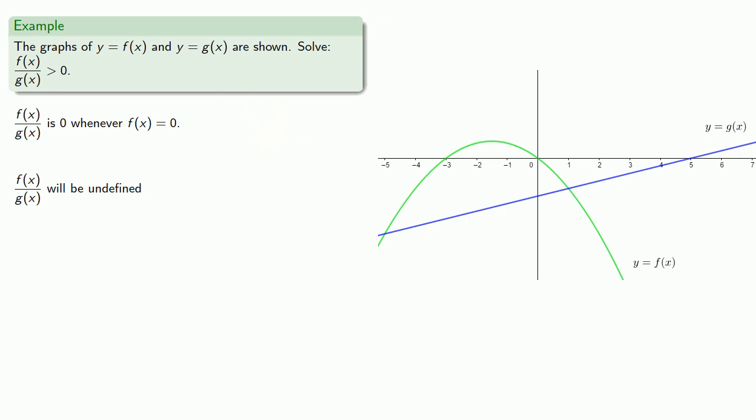On the graph of y equals f of x, f of x is equal to zero whenever y is equal to zero. In other words, at the x-intercepts, and this occurs at x equals negative three or x equals zero.